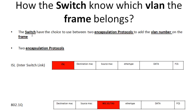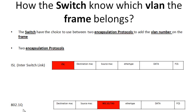The ISL encapsulation, which stands for Inter-Switch Link, works by encapsulating the frame by adding a header before the frame is carried over the trunk link. ISL is a Cisco proprietary protocol that works only on Cisco devices. However, 802.1Q is a standard protocol you can use on all switches. A switch using 802.1Q will insert a four-byte tag into the original frame right after the source MAC address.